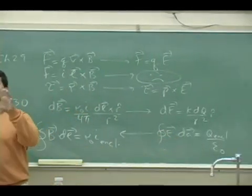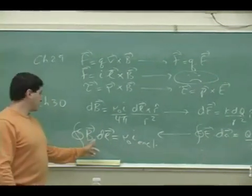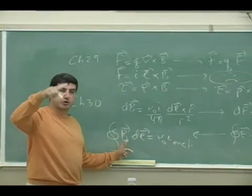The Gauss's law is a surface integral over a whole complete surface, whereas this one is a line integral around a closed line.